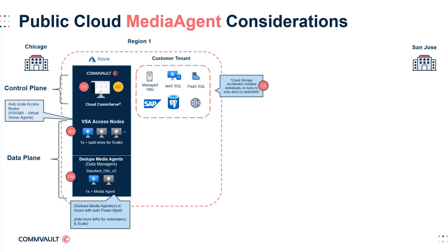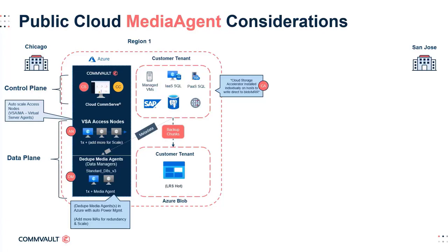A cloud accelerator expedites data transfer to storage by having each client write directly to Azure Storage, reducing traversal costs normally associated with the cloud. In this configuration, egress charges are minimized during data protection operations. With deduplication databases held on the respective media agents, only metadata signatures are sent to the media agent for hash comparison, determining when to write unique blocks to Azure Blob storage through the cloud storage accelerator. As the environment scales and access nodes are deployed automatically, the Cloud Controller handles power management to avoid costs from running persistent compute. The cloud storage accelerator removes the need for data to land on the media agent before writing to storage.